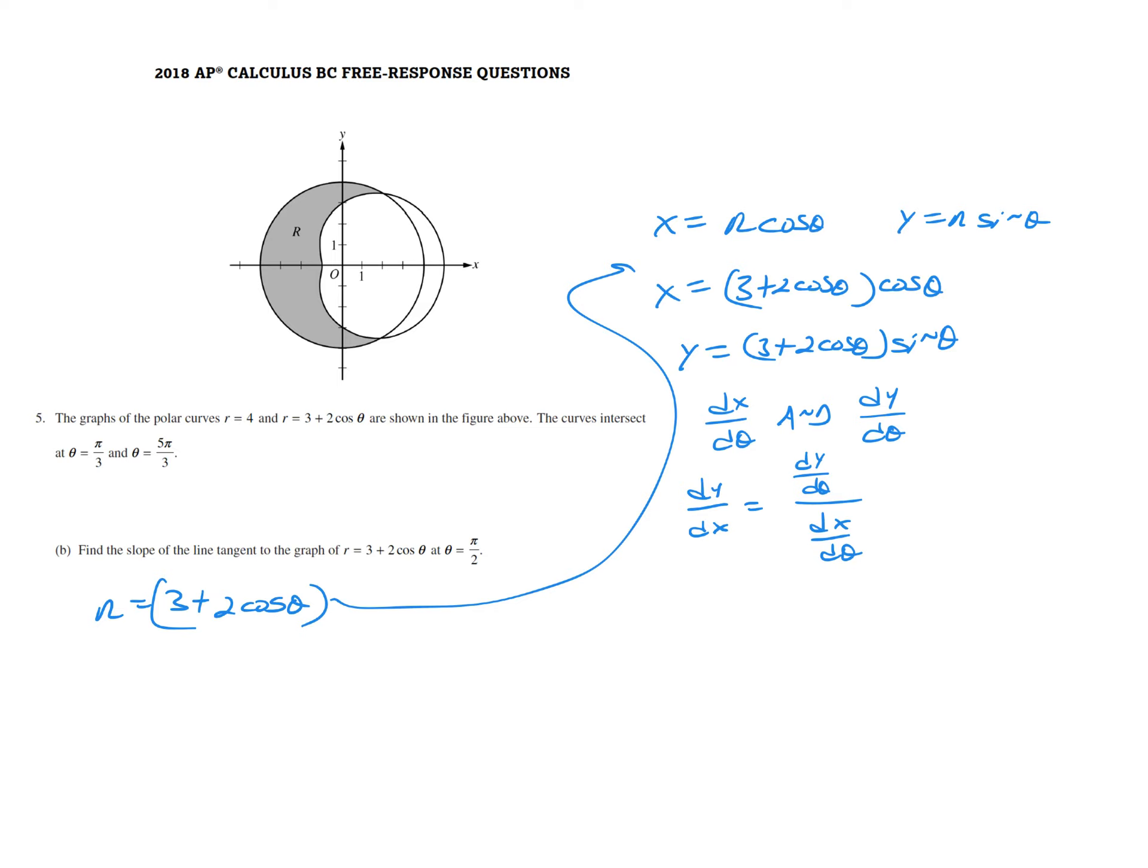When we look at the x equation, we're going to differentiate with respect to theta x equals 3 plus 2 cosine theta times another cosine theta. And we would get dx d theta equals d d theta of 3 plus 2 cosine theta quantity times another cosine theta.